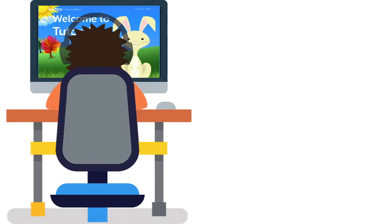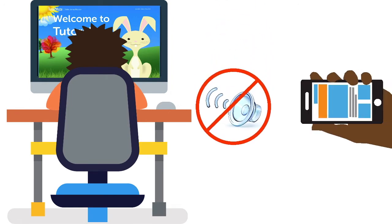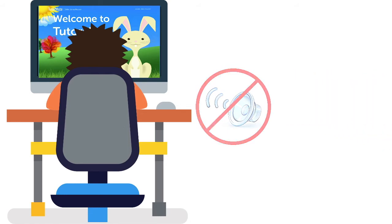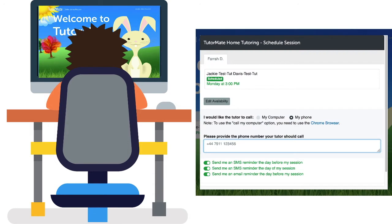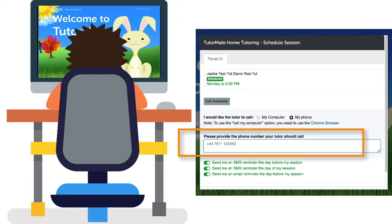If your computer does not have audio, you will need to use a mobile phone line for your child and tutor to be able to talk to each other. If your child will be using a mobile phone to talk to their tutor, select 'Call Your Phone.' Be sure to enter the mobile phone number into the field provided.